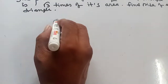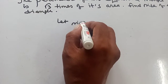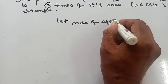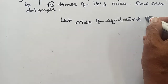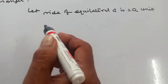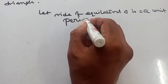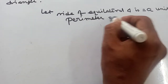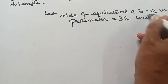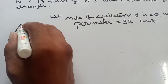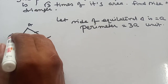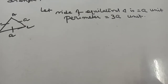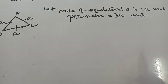At first, let the side of the equilateral triangle be A units. The perimeter is equal to 3A units, because in an equilateral triangle all three sides are equal, so perimeter equals A plus A plus A, which is 3A.